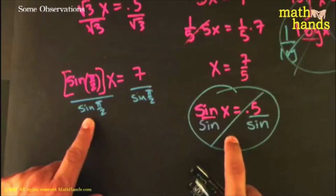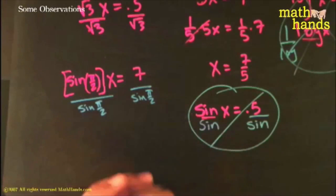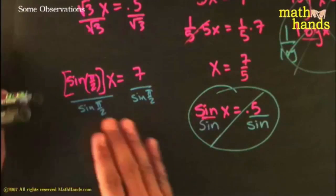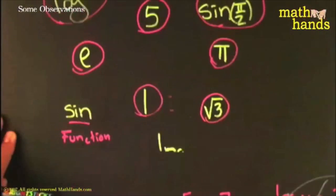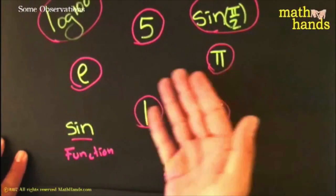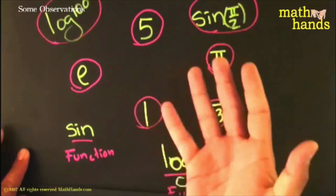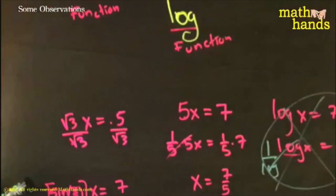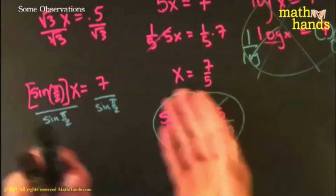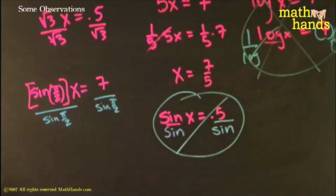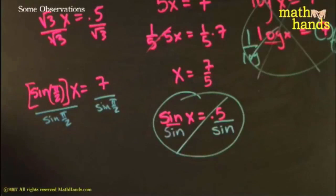But you cannot divide both sides by sine alone - they're totally different animals. So just make sure you're really good at playing this game. Understand what a number is and what's a function. They are different animals, and with functions you don't want to pretend they're numbers or try to apply the axioms or rules for numbers to them.